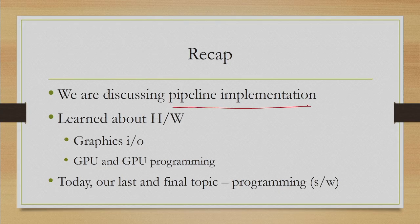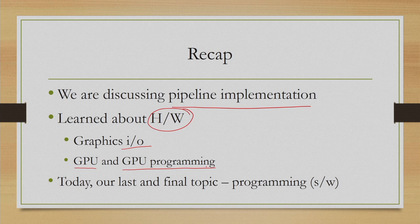Welcome to lecture number 31 in the course Computer Graphics. This is our final lecture on this topic. So far we have discussed the pipeline and pipeline implementation. In earlier lectures we learned about basic graphics hardware including graphics input and output devices, the GPU or graphics processing unit, and the basic idea of GPU programming. Today in this last topic we are going to learn about programming — how to write graphics programs — which is essentially the software aspect of computer graphics.